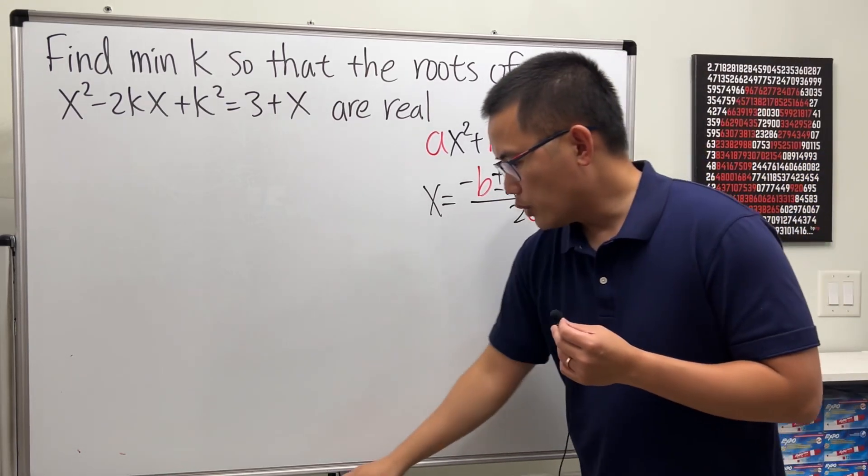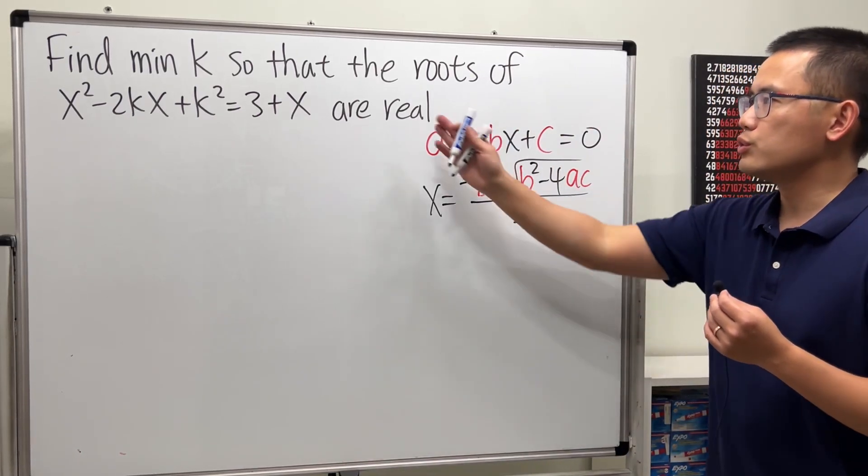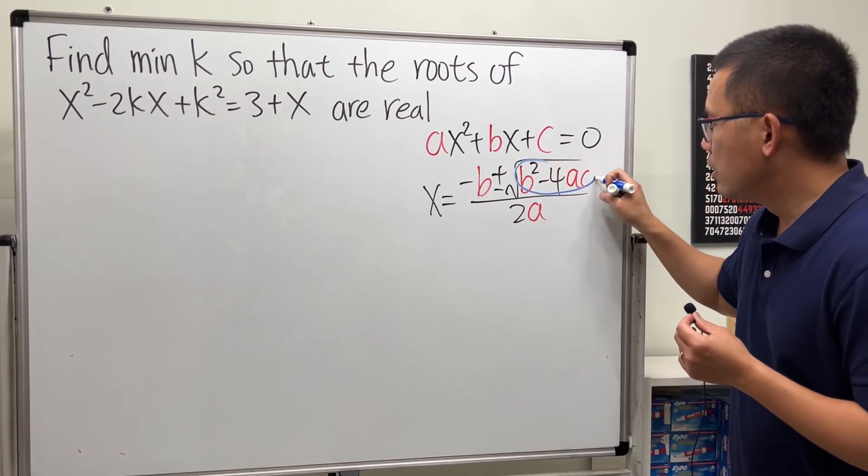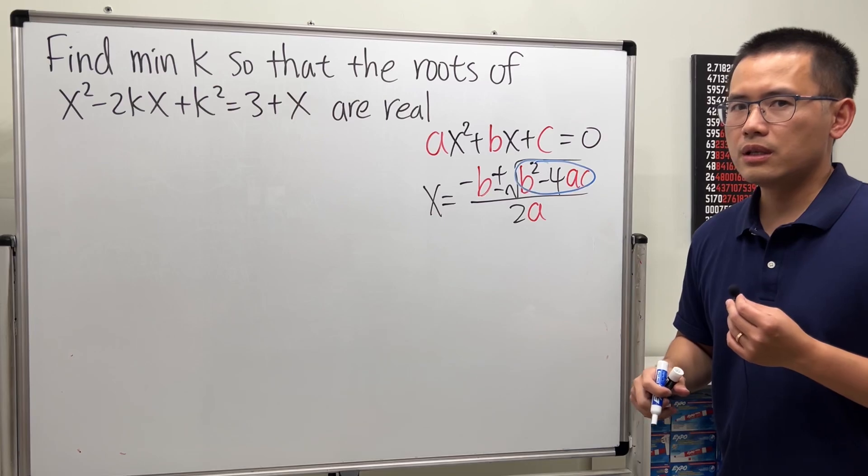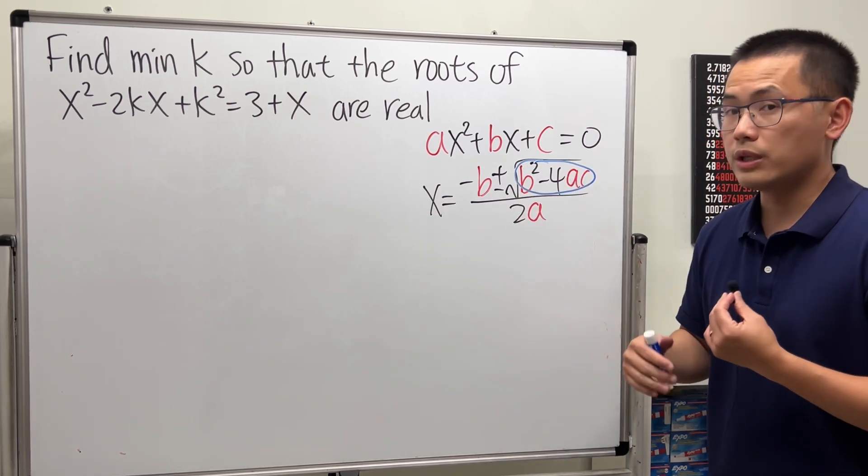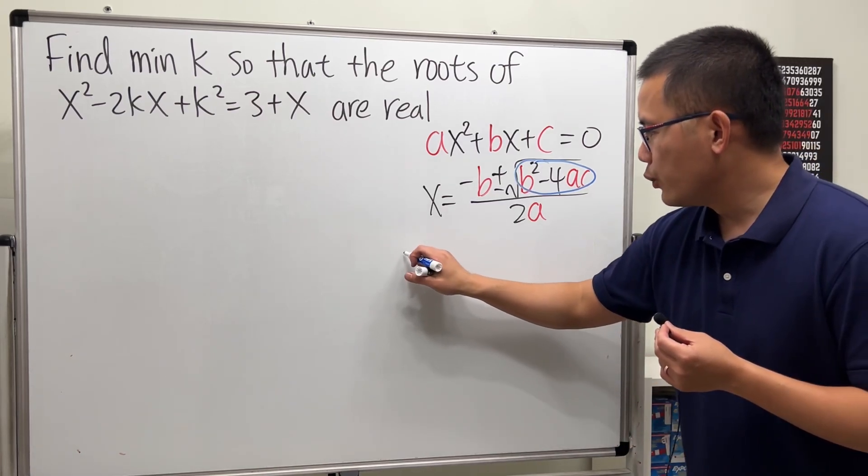This right here will give you all the solutions. Now if you want to have real solutions, we just have to make sure that inside of the square root they have to be non-negative. Because if you have negative inside the square root you get imaginary numbers. So for real roots.